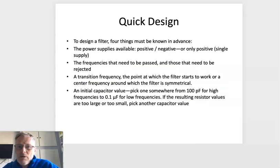So where do you start with choosing values? Well, the first thing to think about is whether you're running from a positive and a negative rail, so split rail, or a single rail. And then think about the frequencies that you need to be passed and those that need to be rejected. So you think that will give you an indication of where your filter cutoff needs to be and where you're gonna have to sweep around to.